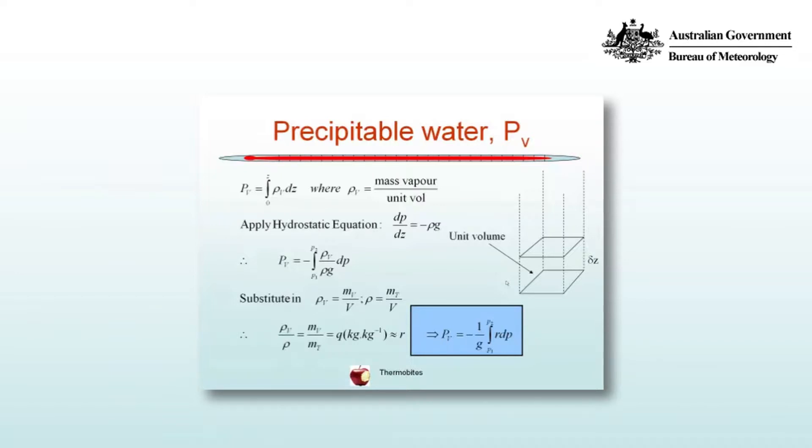We can apply the hydrostatic equation dp/dz equals minus rho g to our definition, our integral, and replace dz in the integral by dp, remembering that pressure is something that's measured quite naturally by balloons. So now the definition of precipitable water P subscript V is equal to the integral from P1 to P2, where P1 is going to be greater than P2, of rho V the density of water vapour over rho the density of air by g by dp.